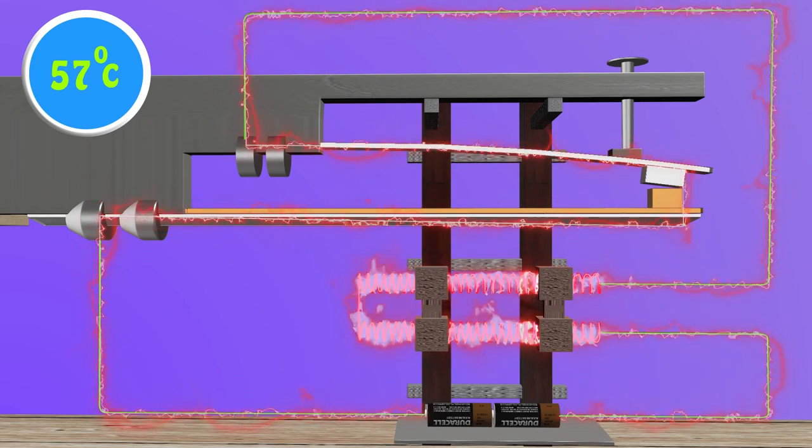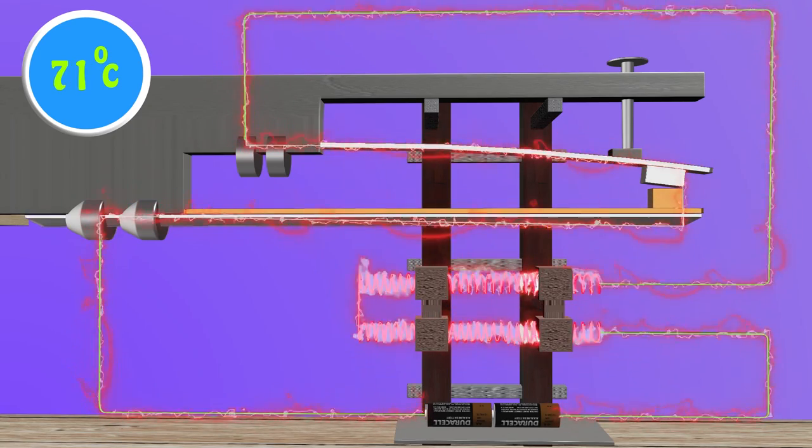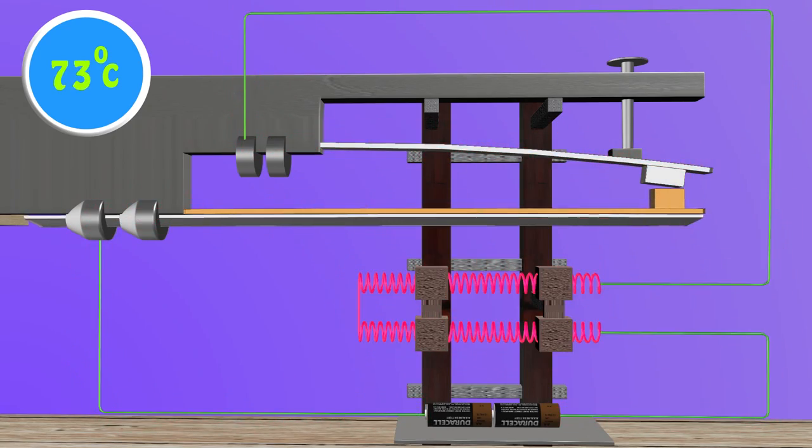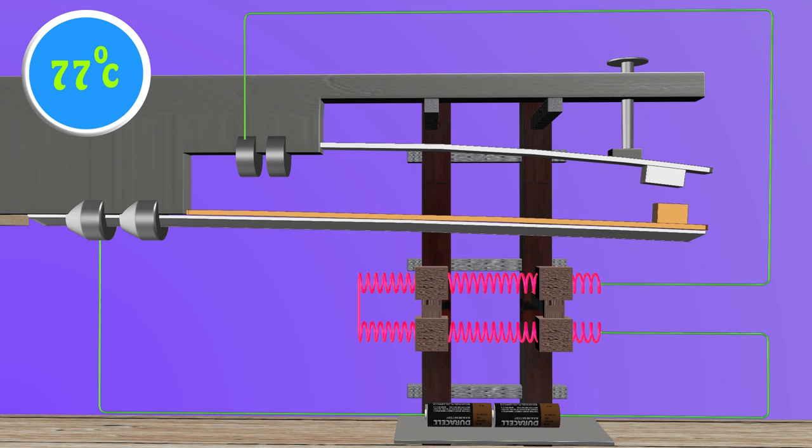At a specific temperature, bimetallic strip starts bending gradually. It detaches from the spring thereby interrupting the flow of DC current.